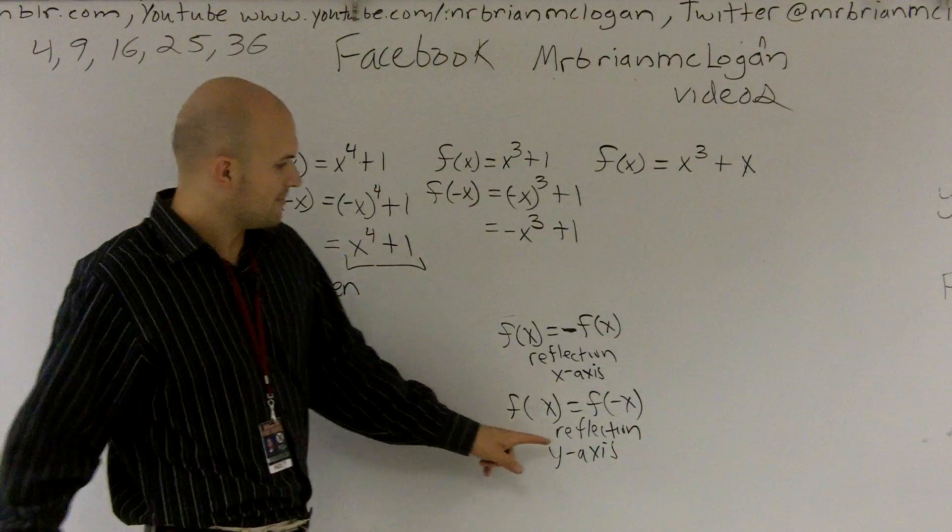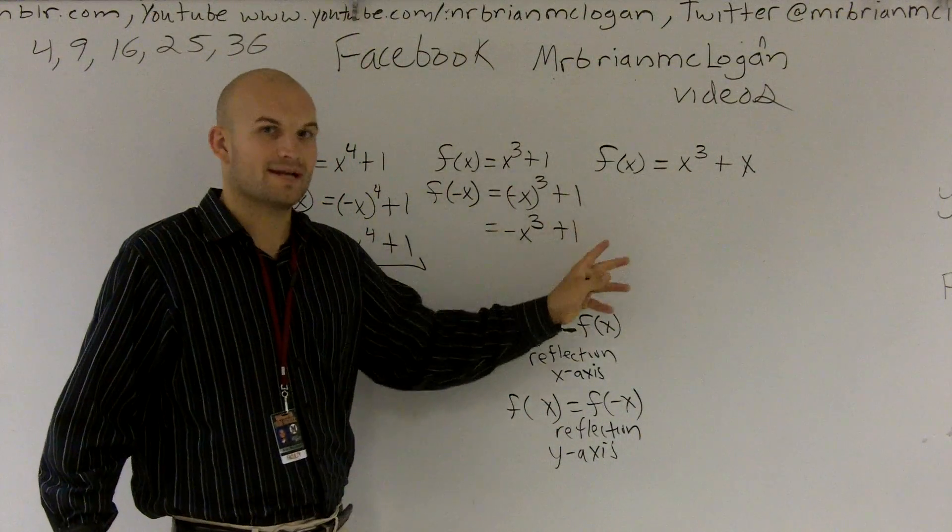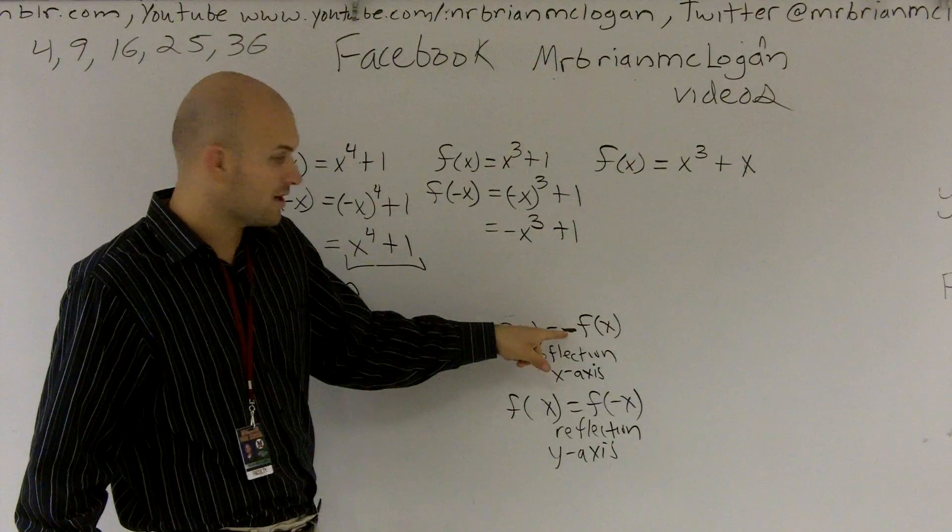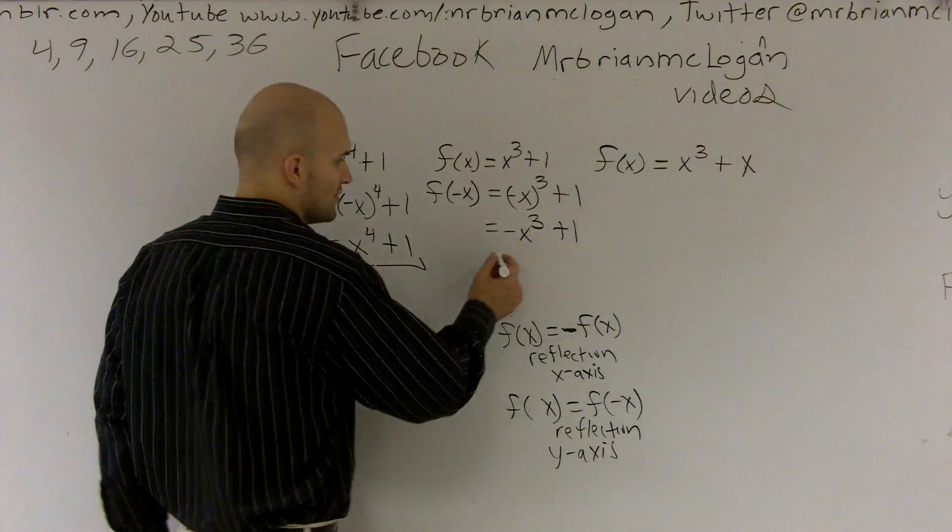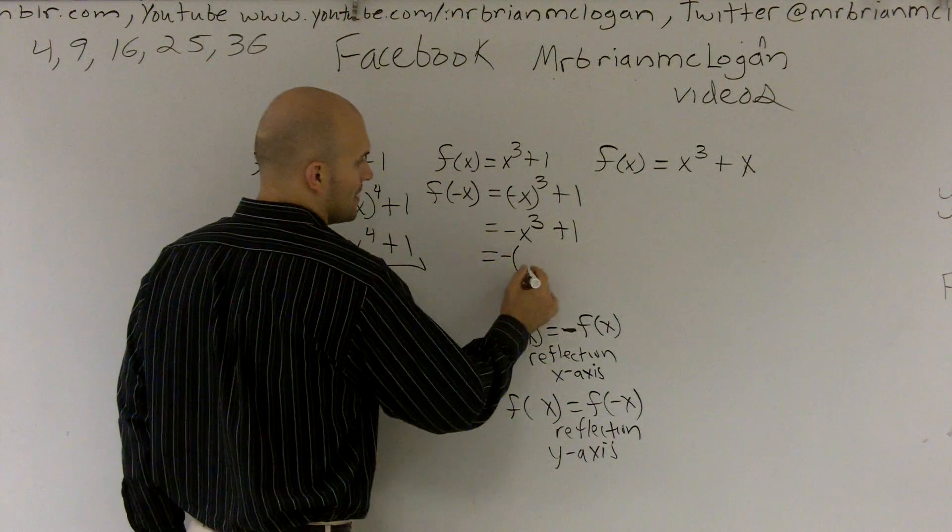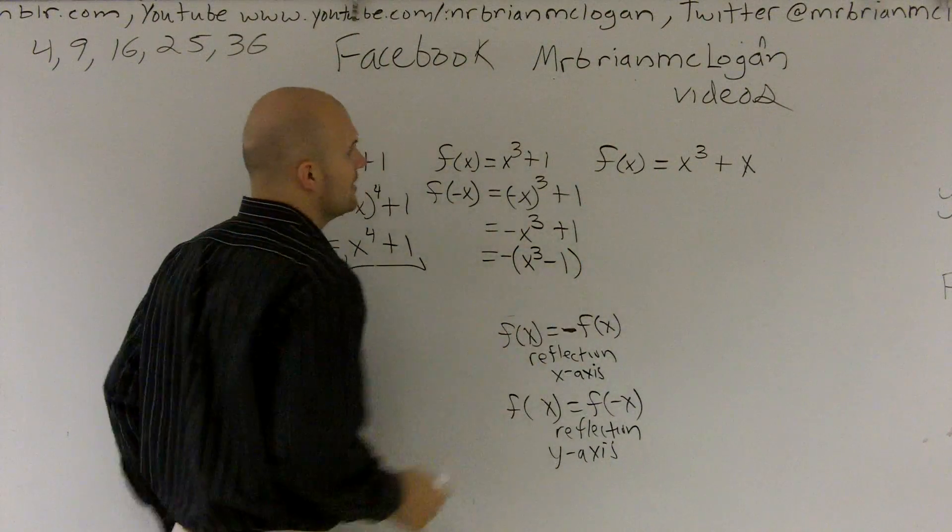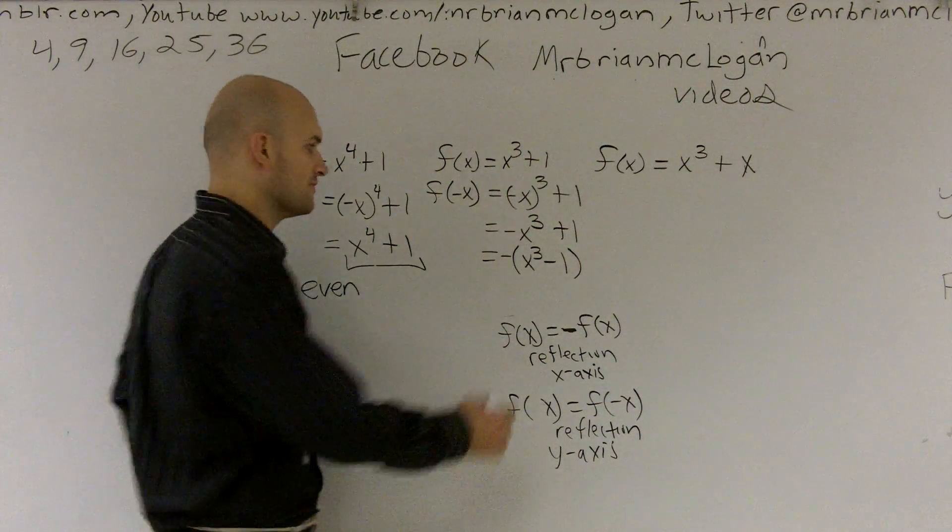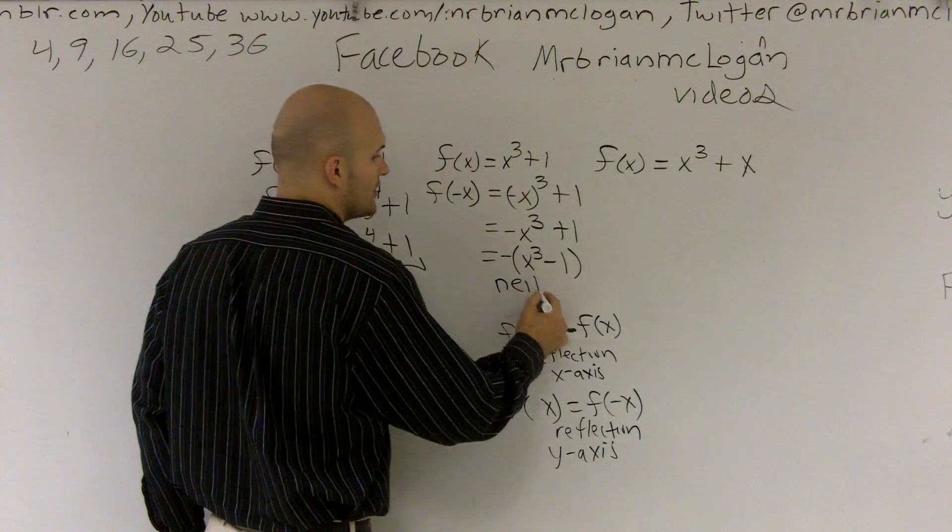A lot of times you can multiply by negative 1, or a lot of times what we like to do is write it, so we factor out that negative 1 to see if we get f of x. So if I factor out a negative 1, I'm left with a positive x cubed minus 1. Again, we do not have our original function, so therefore, this is not odd nor even.